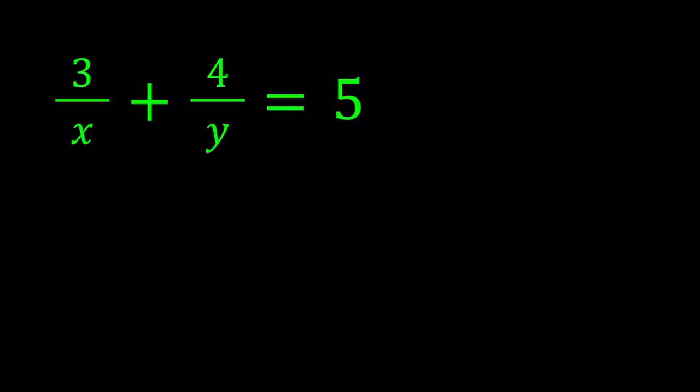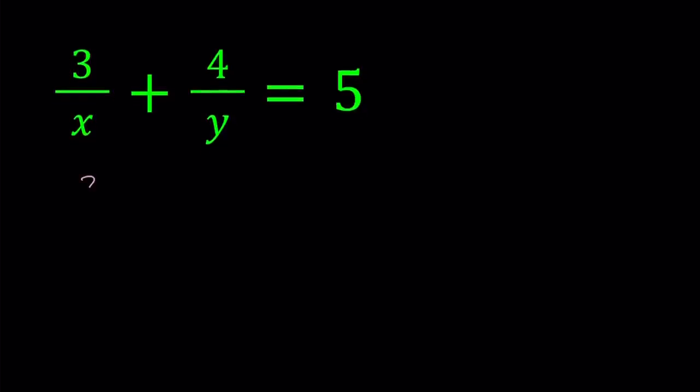Let's go ahead and take a look at this equation. First, I would like to make a common denominator. That gives me 3y plus 4x divided by xy but I'm going to go ahead and cross multiply that. And to be able to use Simon's favorite factoring trick, I'm going to put everything on the same side and write my expression like this.